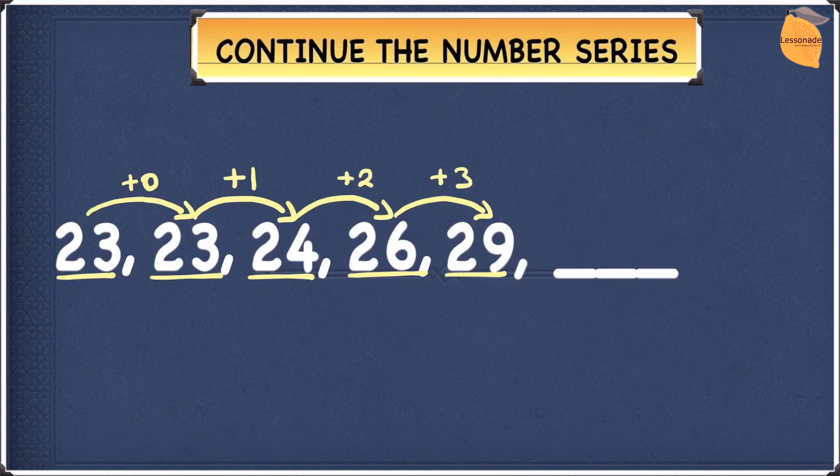As you can see, we have a pattern going on: plus 0, plus 1, plus 2, plus 3. So the next one should be plus 4. Let's add 4 to 29. Adding 4 to 29 gives you 33. So the answer is 33.